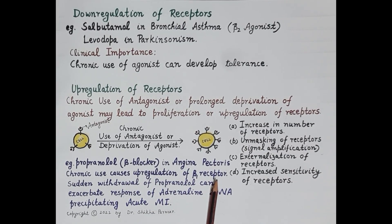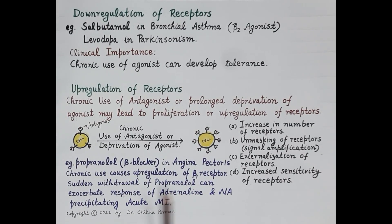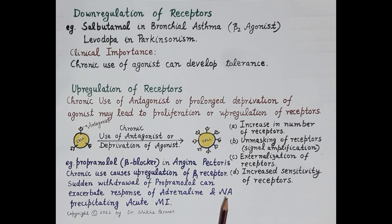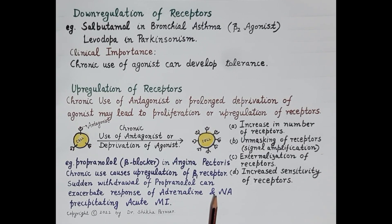If propranolol is suddenly withdrawn, it can exacerbate the response to endogenous neurotransmitters adrenaline and noradrenaline. Adrenaline and noradrenaline are adrenergic endogenous agonists. Sudden withdrawal can cause excessively high heart rate and excessive increase in force of cardiac contraction, precipitating acute myocardial infarction. Therefore, antagonists should be withdrawn gradually to prevent an exacerbative response to agonist.